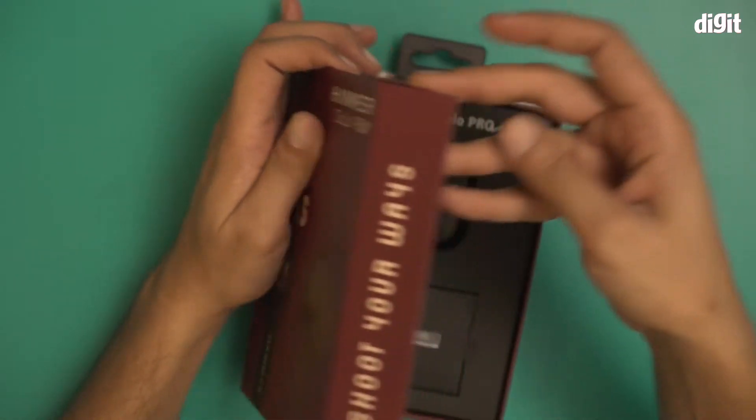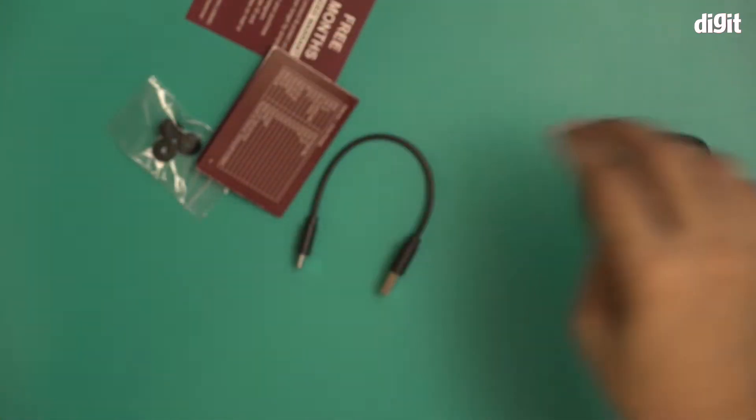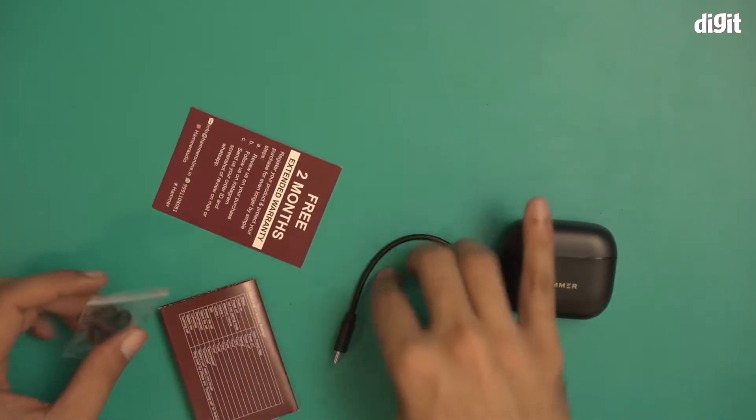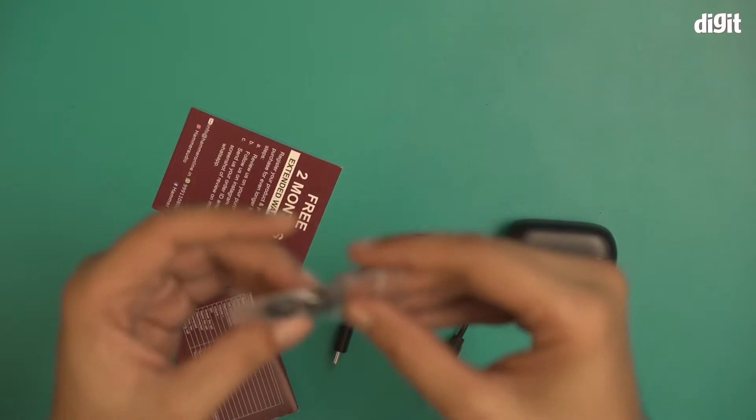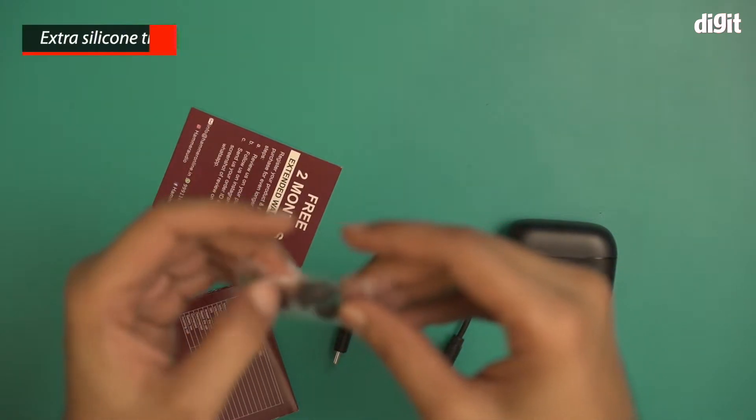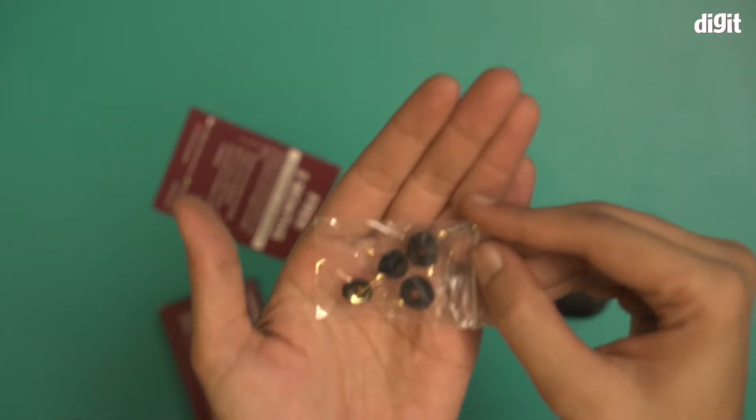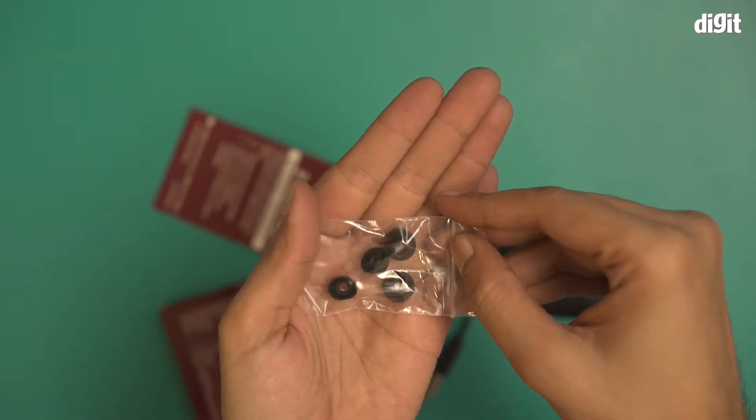These are all the components of the box. We have a packet that has two extra silicone tips, one is the large size and the other is the small size. You can see now the two large and two small, so two extra pairs of silicone tips.